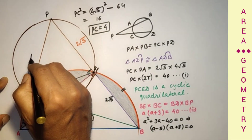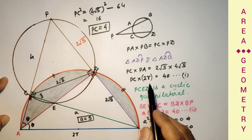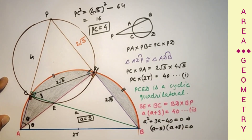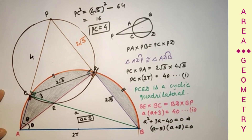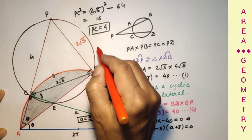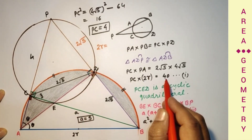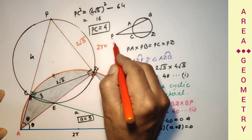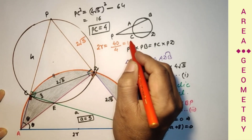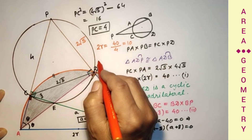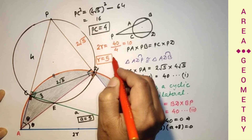So PC equals 4. We need 2R (the diameter). From our first relation, 2R = 40 / PC = 40 / 4 = 10. Therefore the radius R equals 5 units.